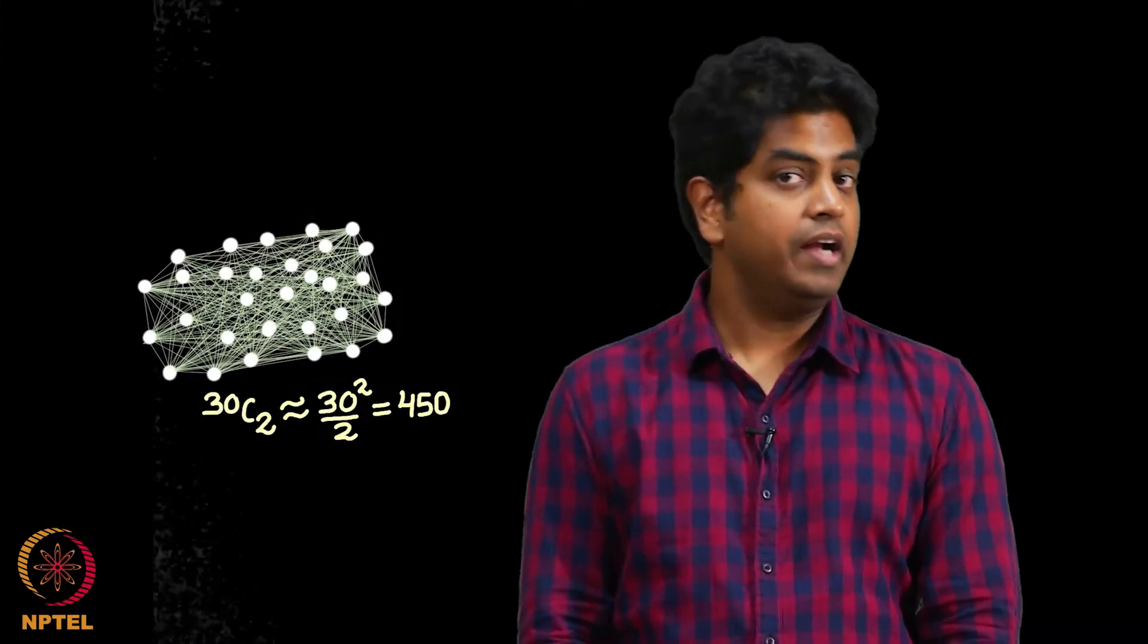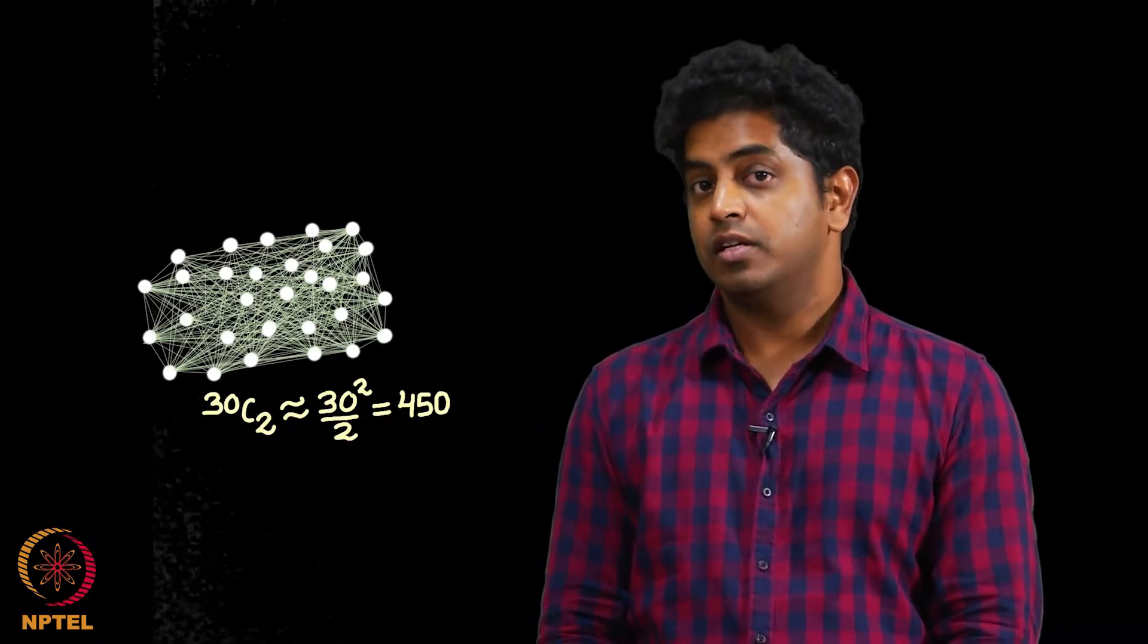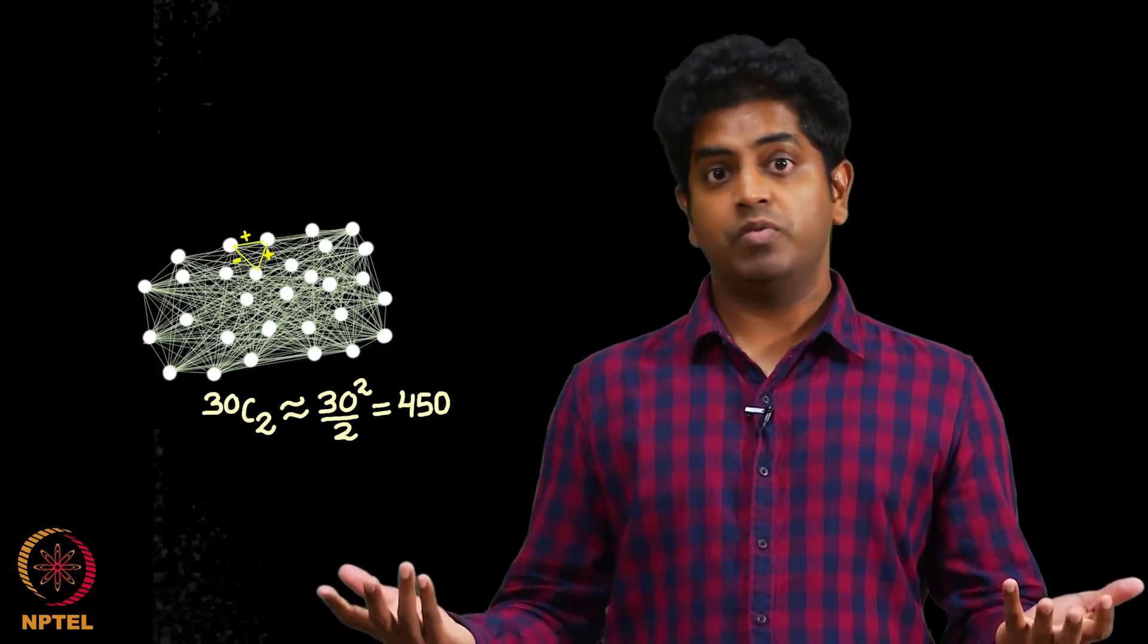Observe carefully. Here is a graph with 30 nodes, 30 people and roughly 450 friendships which can be positive and negative.